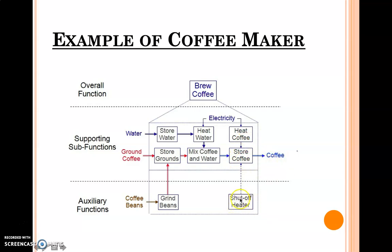Set off the heater if it is already stored. Grind the beans. Coffee beans will be from here. You have to grind the beans from here and supply it to there. So this is your auxiliary function. This is not your supporting sub-function, this is the subordinate functions of your coffee maker. Keep this thing in mind whenever you are designing. This is one example I have taken.